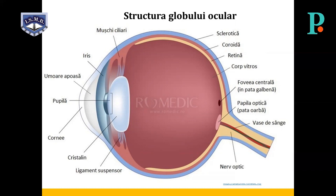Sistemul dioptric sau aparatul optic al globului ocular reprezintă totalitatea mediilor transparente care au rol de a refracta și focaliza razele de lumină pe retină în fovea centralis. Componentele sistemului dioptric sunt: cornea, umoarea apoasă, cristalinul și umoarea sticloasă. Cornea transparentă permite trecerea liberă a luminii; este fixă și reprezintă două treimi din puterea de refracție a ochiului, adică plus 40 de dioptrii. Umoarea apoasă este un lichid transparent ce ocupă spațiul dintre cristalin și cornea, secretată permanent de procesele ciliare.